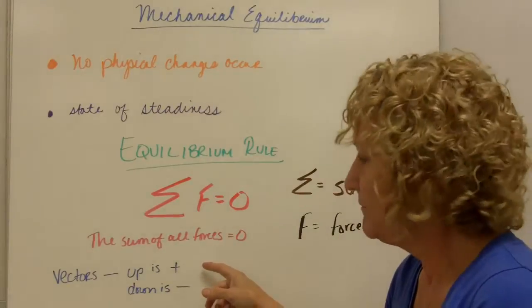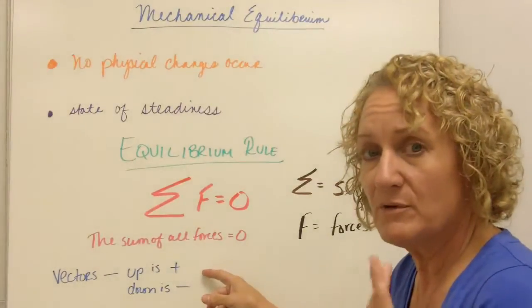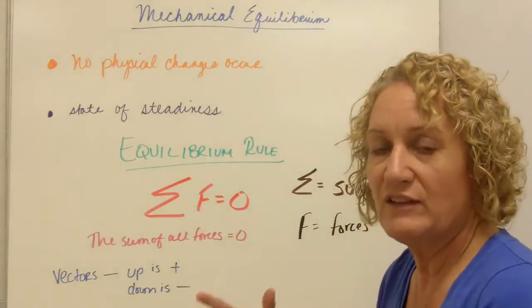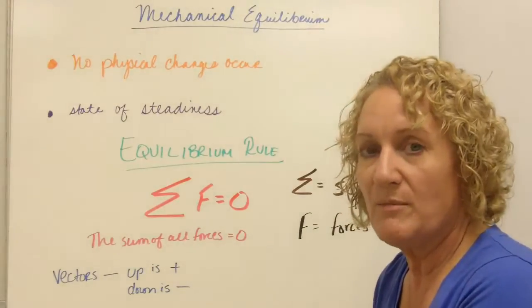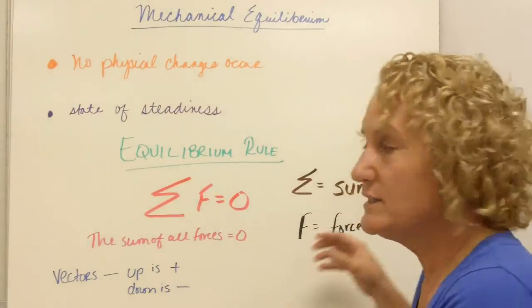In vector talk, up is considered a positive number, down is considered a negative number. That's just convention. That's the way all scientists have decided they're going to talk about vector quantities. So we're going to do the same.